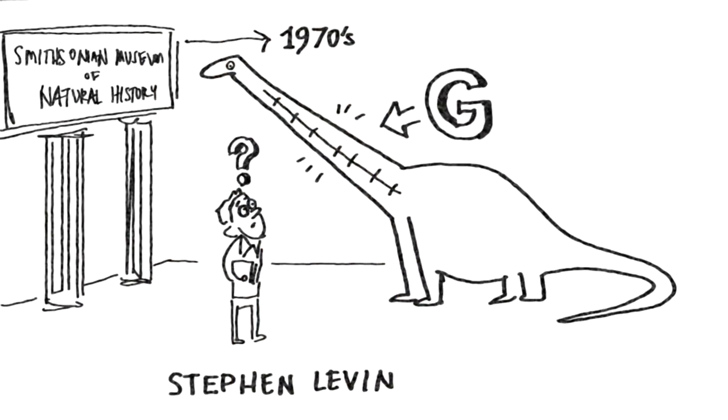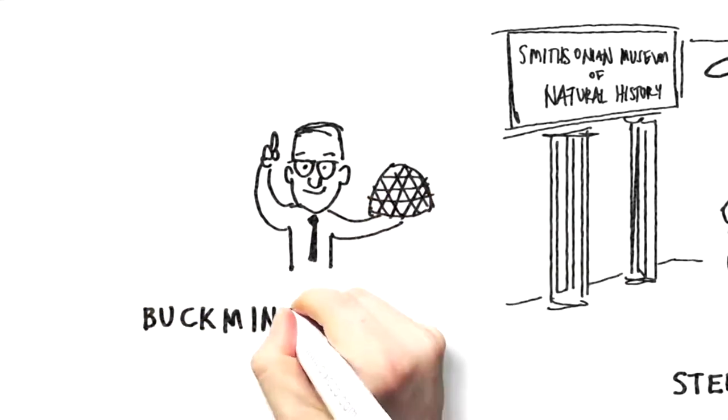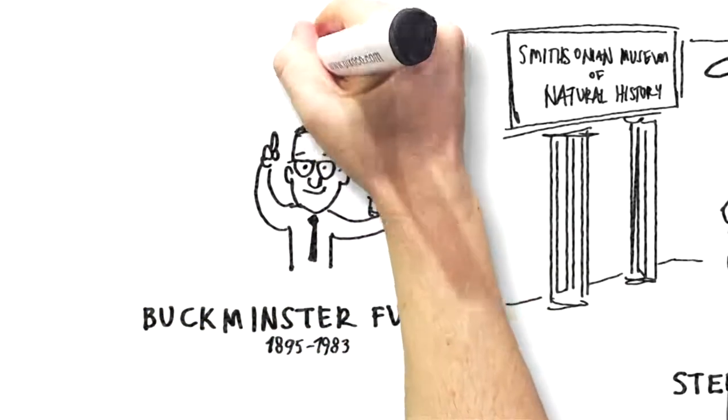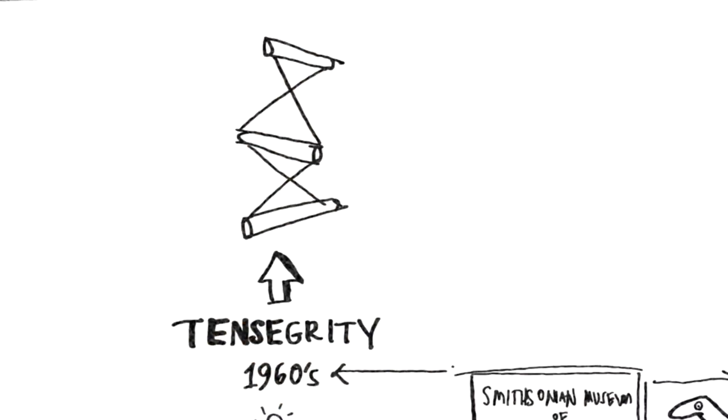Levin knew that he was onto something and recalled something that he had read about: Tensegrity, a structural principle coined by architect Buckminster Fuller ten years earlier, where hard parts like spars and soft parts like ropes create a flexible force through the combination of tension and stability.